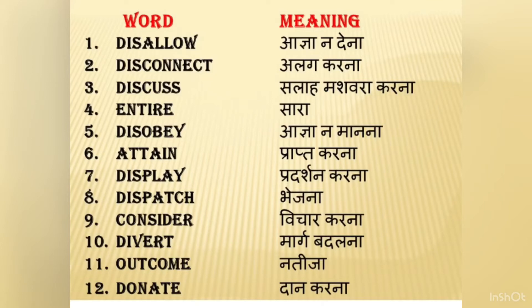Entire means sara — whole or complete. For example: The entire field was full of water. You should make your own sentences too. Disobey means aagya na maana — to not obey. For example: He disobeyed his teacher, or he disobeyed the orders of his father.